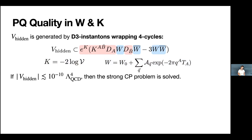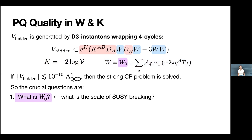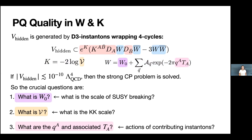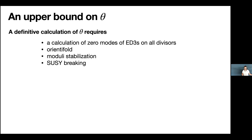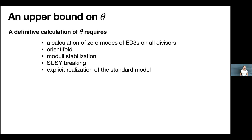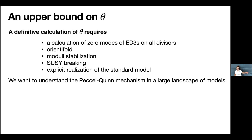To check this condition there are crucial questions: what is W_0, i.e., the scale of supersymmetry breaking? What is the overall volume of the Calabi-Yau, i.e., the KK scale? And what are the instanton charges Q_a and associated Kähler moduli T_a, i.e., the actions of the contributing instantons? A definitive calculation would require computing zero modes of Euclidean D3 branes, an explicit orientifold, a moduli stabilization scheme, supersymmetry breaking, and an explicit standard model realization. We'd like to understand the PQ mechanism in a large landscape of models, so instead we'll make our assumptions maximally conservative.